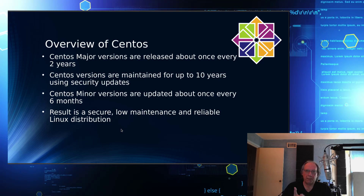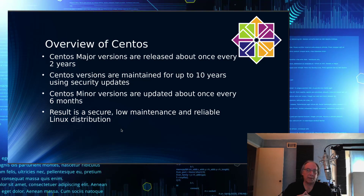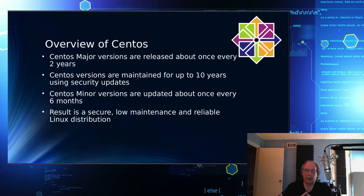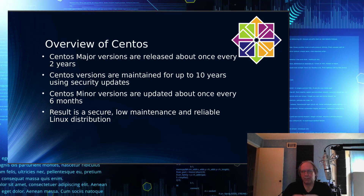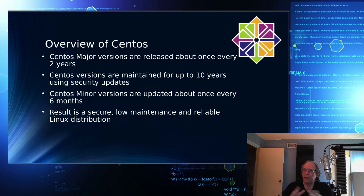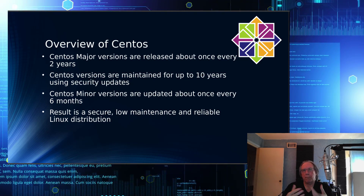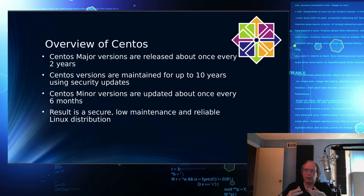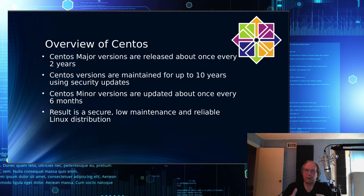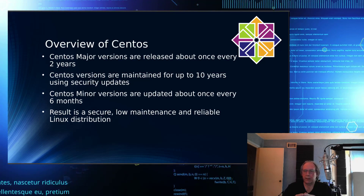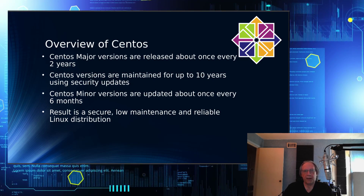So first, rewind a bit. CentOS releases major versions of its operating systems about once every two years, and that's in line with Red Hat Enterprise Linux — it varies, so it's not exactly two years. But they maintain those versions for up to 10 years using security updates. And then there are minor versions released about every six months or so, done with security updates. This makes CentOS and Red Hat Enterprise Linux a secure, low-maintenance, and reliable Linux distribution, commonly found in server rooms.